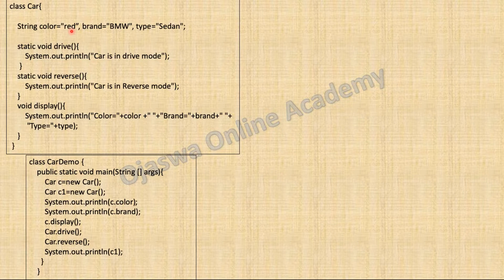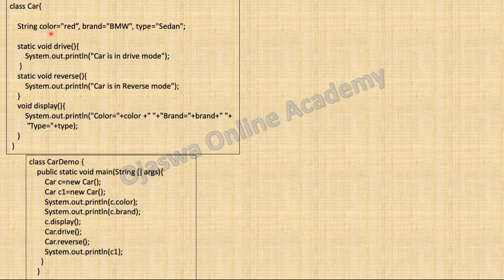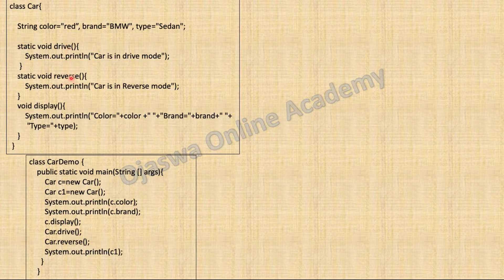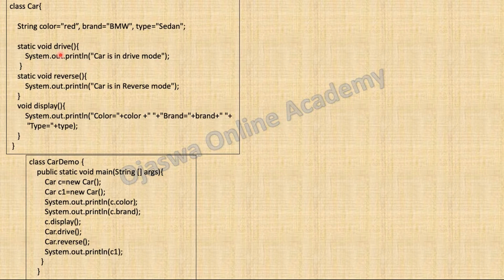Instance variable color has value red, instance variable brand has value BMW, and instance variable type has value sedan. Instance variables are not local to any method — they belong to an object and define data or state of the object. To define behavior of an object, methods are used. Here I have defined methods drive and reverse, which represent the functionality of a car object. There is also a display method used to print the data of the object. This is my class car.